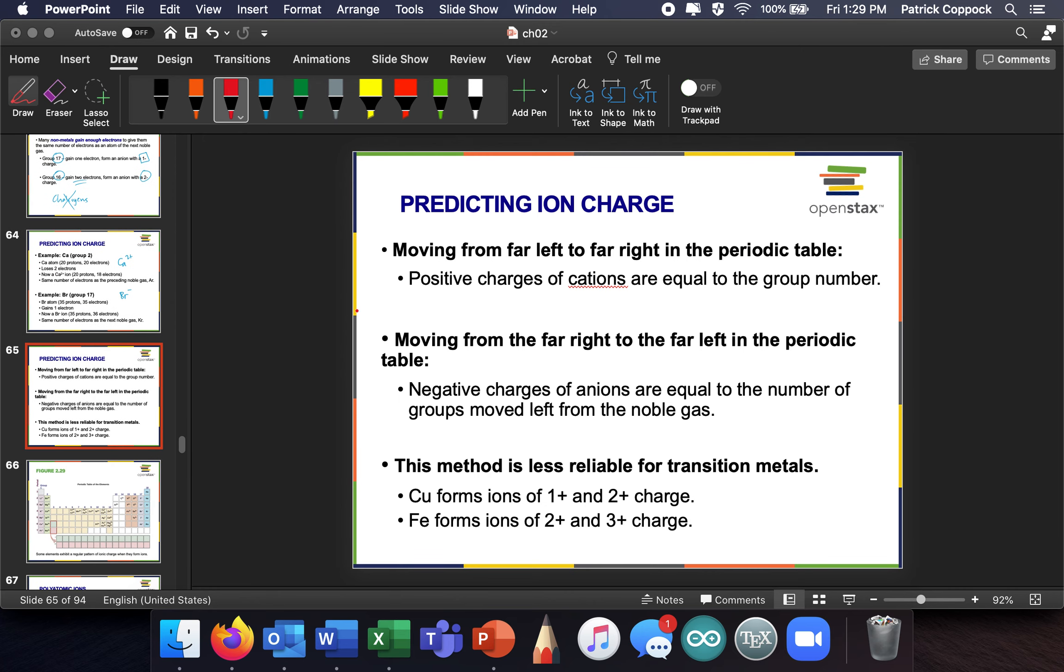So positive charges of cations are equal to the group number. The negative charges of anions are equal to the distance that you move from the left of the noble gas, which I was sort of saying just a second ago. This method is less reliable for transition metals. So the things in between, I said nothing about the guys in between, right? Because we don't know. That we have to look up or you have to be told that. So these are all plus ones. These are all plus twos, minus ones, minus twos. A lot of times these are minus threes. That's pretty reliable. This is less reliable. Those are less reliable.